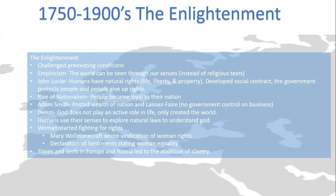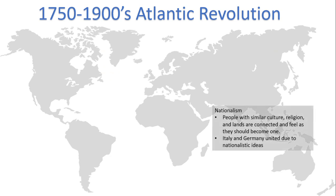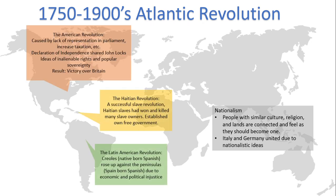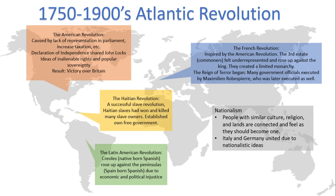Lastly, slaves and serfs in Europe and Russia, along with abolitionist forces, led to the abolition of slavery and serfdom. A lot of revolutions occurred in this period — these were called the Atlantic Revolutions. Each were influenced by Enlightenment thinking in some way, and each were based on or influenced by the last. The four we're going to look at are the American, Haitian, Latin American, and French Revolutions.